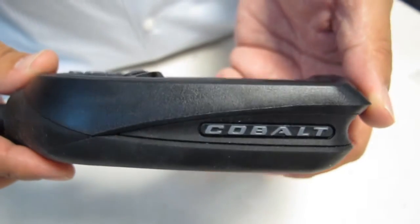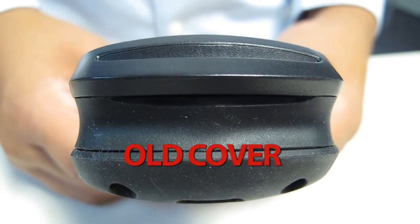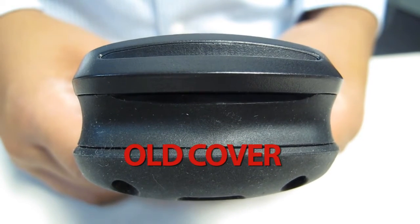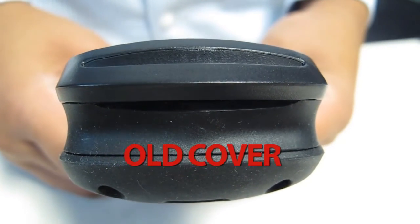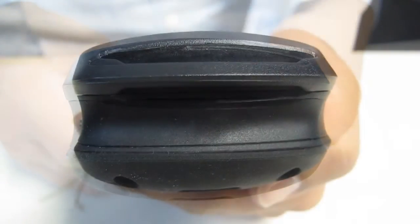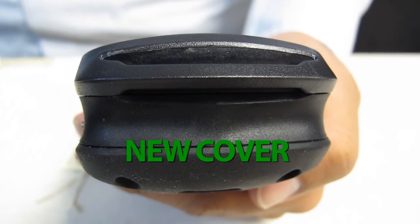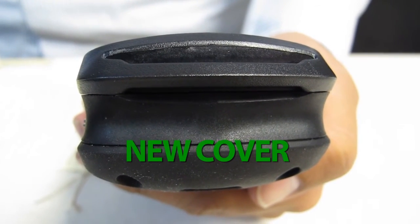When looking down onto the top of the Cobalt, it is easy to determine the difference between the old and the new front cover. The new cover indicates that the Cobalt is either outside of the recoil range or has previously passed inspection.